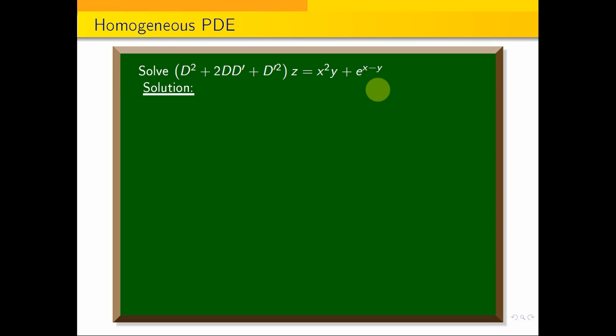The problem is a homogeneous partial differential equation. We will verify this. Each term has power equal to 2: D² has power 2, D·D' has power 2 (1+1), and D'² has power 2. All powers are equal to 2, so this is a homogeneous PDE.